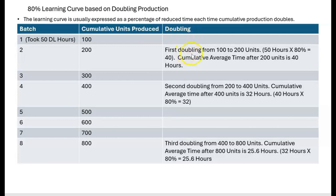When do we apply the 80% learning curve? The first time production doubles — at batch two, when we now have 200 cumulative units. We multiply 80% times the 50 hours it took to make the first batch, and we get 40 hours. That 40 hours is the cumulative average time after 200 units. The cumulative average time to make those 200 units is 40 hours based on an 80% learning curve. That does not mean it took 40 hours to make the second batch specifically.